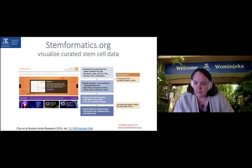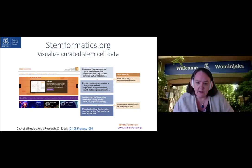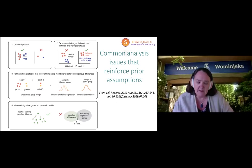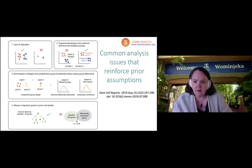The tagline for the Stemformatics platform for the last 10 years has been 'read the paper, see the data,' where we help people who are not bioinformatics experts explore curated data from the major studies in the stem cell field. When I say curated, I mean we go through a very strict process of reviewing the quality of the data, both from the experimental perspective and from the perspective of the data quality itself. About 30% of the datasets we bring in from the public domain fail these QC metrics.